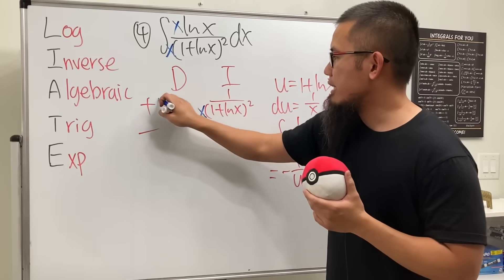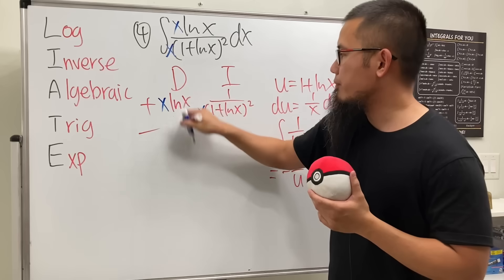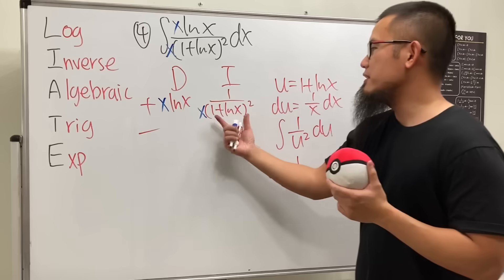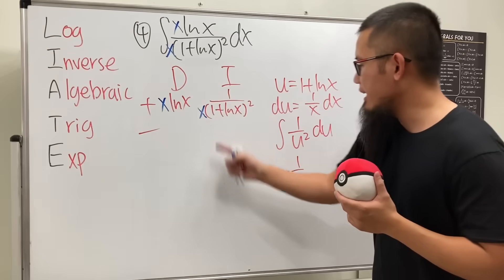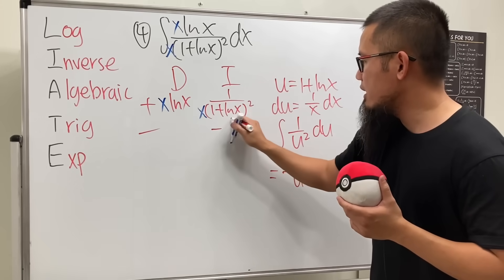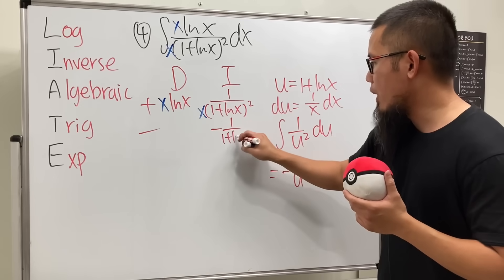Yes, very nice. Check this out. When we integrate this guy, it's just negative 1 over u and u is that. So we end up with negative 1 over 1 plus ln x. And when we differentiate this guy, we use the product rule.